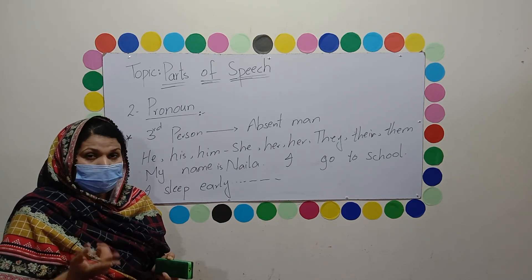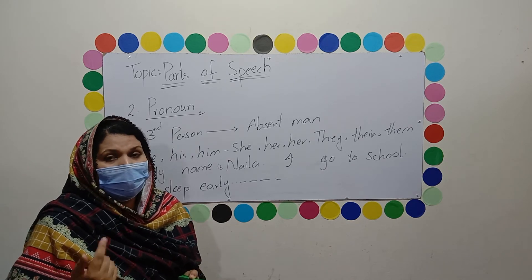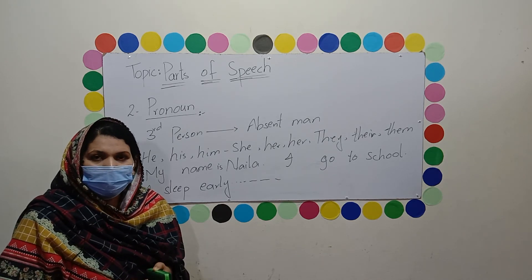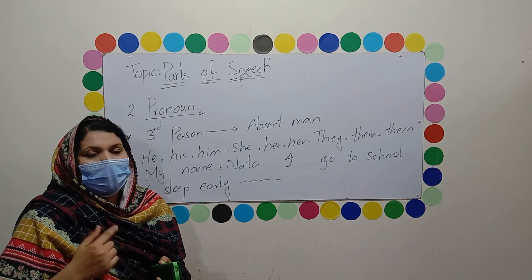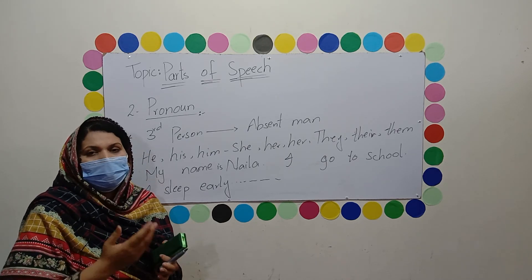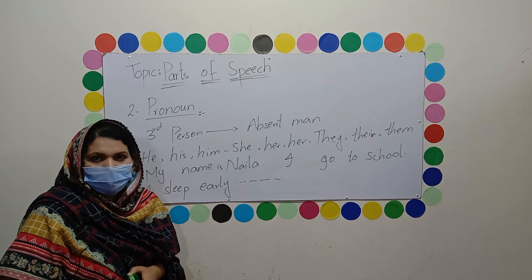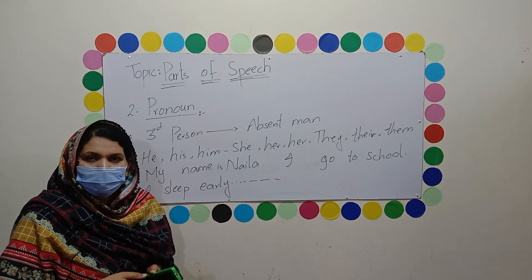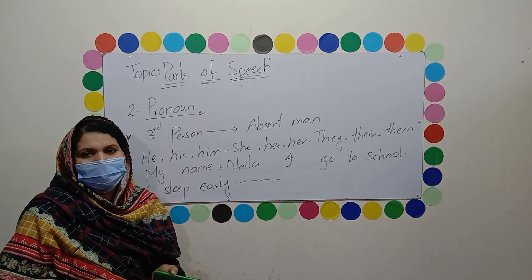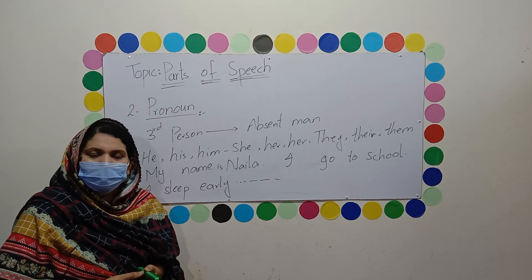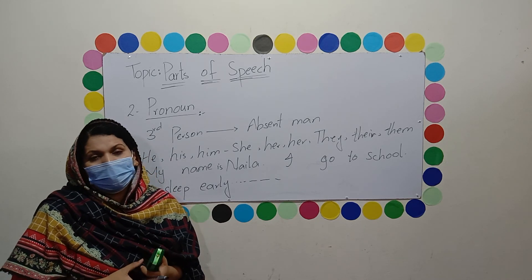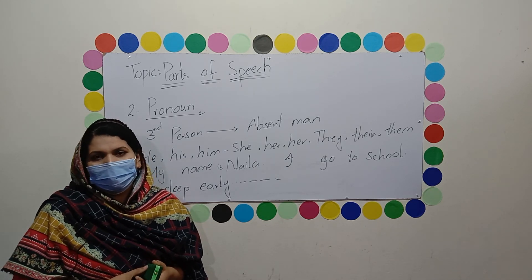If you are writing about yourself, you use the first person — I. You are listening to me; 'me' is the first person, and you are the listener, so you are the second person. When you talk about another person who is absent, you use the third person — like 'them'. First person: speaker. Second person: listener. Third person: absent man. Hope you now understand the pronoun. Please like and subscribe my channel. Thank you so much.